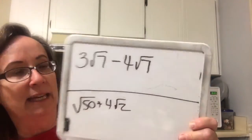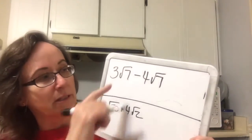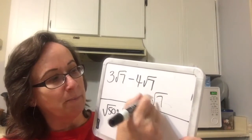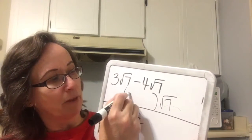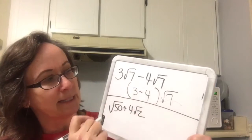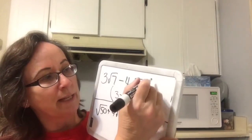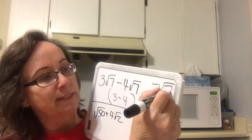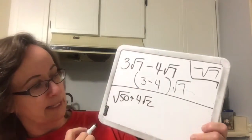On the next one, again, we have like square roots, so we could pull the square root out and end up with 3 minus 4 inside. 3 minus 4 is negative 1, so negative square root of 7 would be the answer.